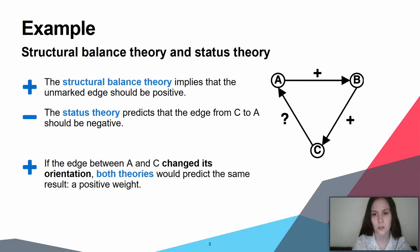While the theory of balance implies that the marked edge from C to A should be positive to ensure that the product of all signs is positive as well, the theory of status predicts that the edge from C to A should be negative since C has a higher status than A.